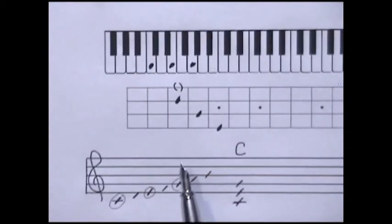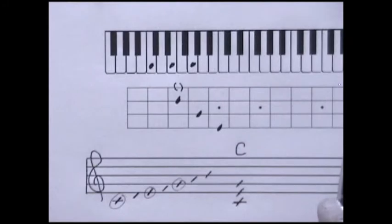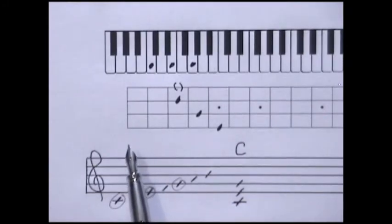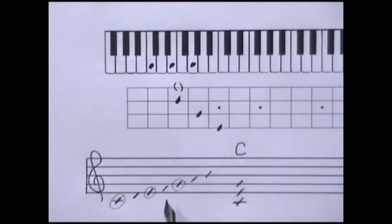And some comments about this fretboard diagram. The bridge is towards the right. I'm using a low G option for this string on the bottom, and the tuning is C6. So this would be appropriate for soprano, concert, and tenor ukuleles.